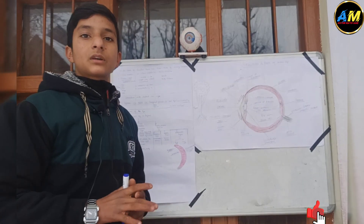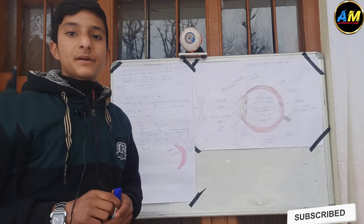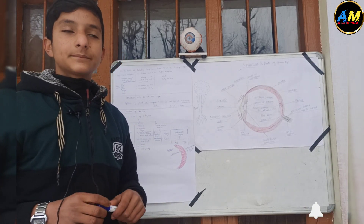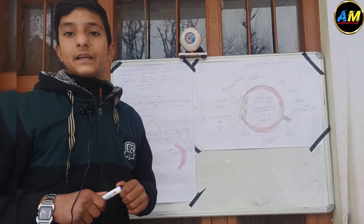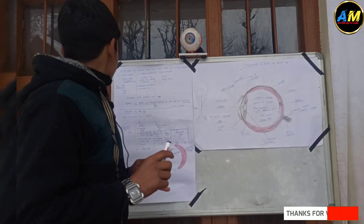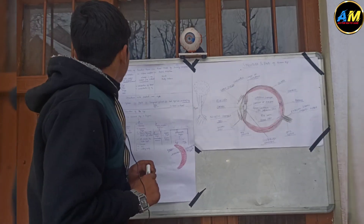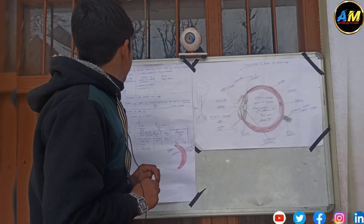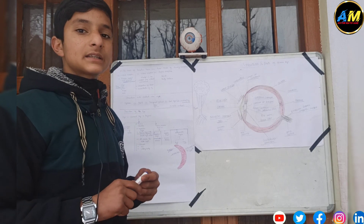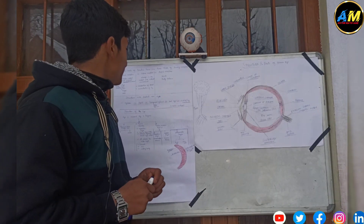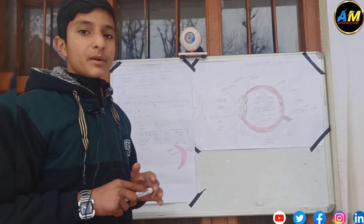The exteroceptor responds to the external environment — these include the ear, nose, tongue, skin, and eye. So eye, ear, and nose are among the most common exteroceptors. The interoceptors respond to internal conditions, such as the concentration of CO2. The proprioceptors are related to joints and body balance.